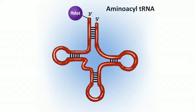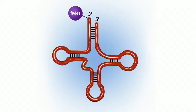We say that the tRNA has been charged with an amino acid. We call that molecule aminoacyl-tRNA. The enzyme that does the charging is called aminoacyl-tRNA synthetase — that's an enzyme worth knowing. That charging process requires energy, so it uses ATP.